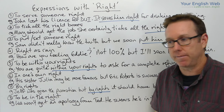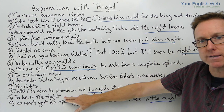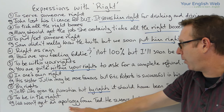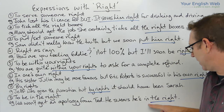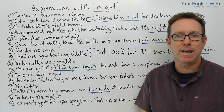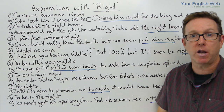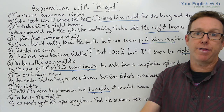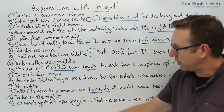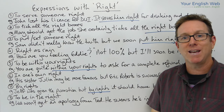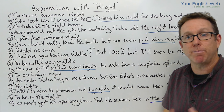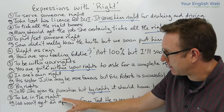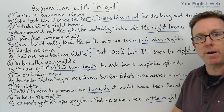The eighth expression is 'to be in the right'. Example: We won't get an apology from Ted — he swears he's in the right. This means he believes that his position, either morally or legally, is the correct one. Because he thinks he's in the right — that what he did is correct — that's why he won't apologize.